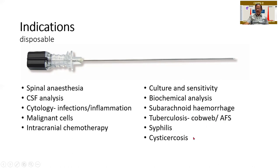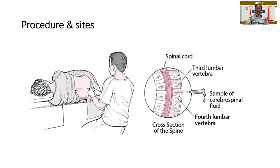Syphilis, cysticercosis — these are all certain indications. I would like you to have this in mind because these can be asked: what is the indication for doing a CSF analysis? The procedure — the patient is supposed to be in a C-shaped position so that there is the pairing of the vertebrae and the intervening tissue is exposed, and you go directly into the intervening space.